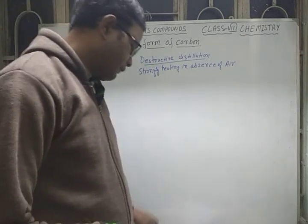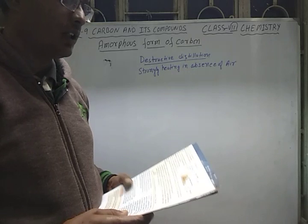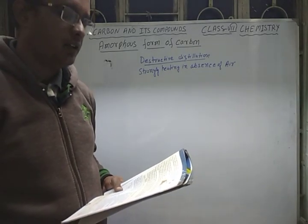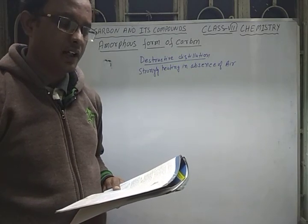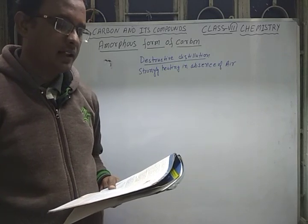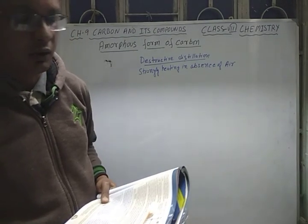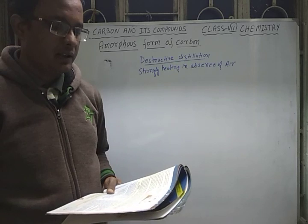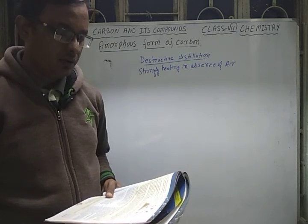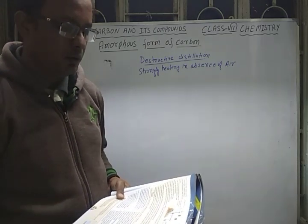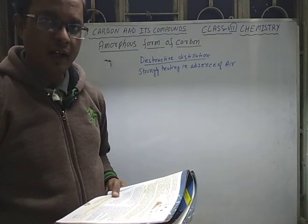An activity demonstrates destructive distillation of wood: wood pieces are placed in a test tube and strongly heated in the absence of air. A gas comes out and is collected in another test tube containing pyroligneous acid. A black deposit forms at the bottom, called wood tar — or coal tar if coal is used. By destructive distillation of wood, you get wood charcoal, pyroligneous acid, wood tar, and wood gas.